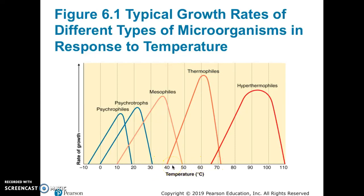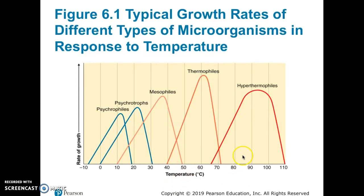On the other end, thermophiles live in hot temperatures — well above normal body temperature, more like a very hot bath. They're the fastest-growing group at their optimum temperature, but they're restricted to places like hot springs, geysers, or hot water vents. There aren't many places on Earth that warm.